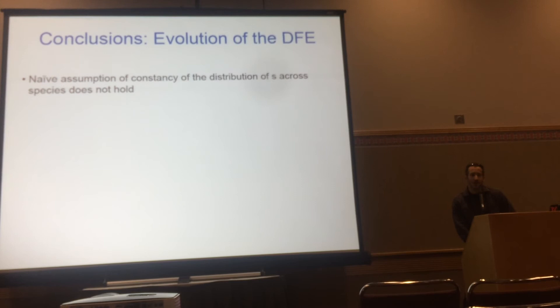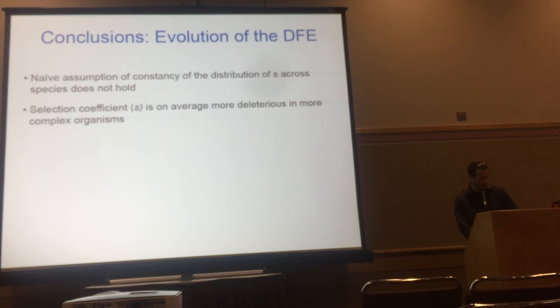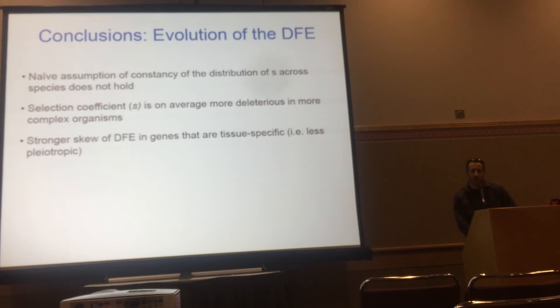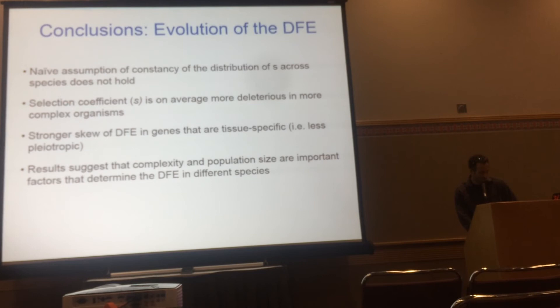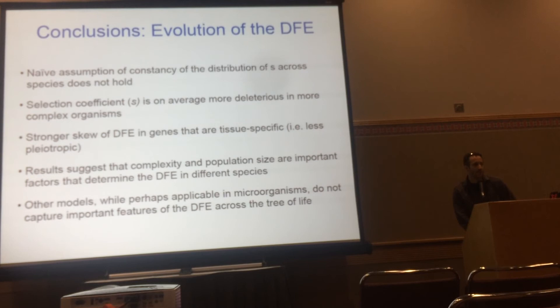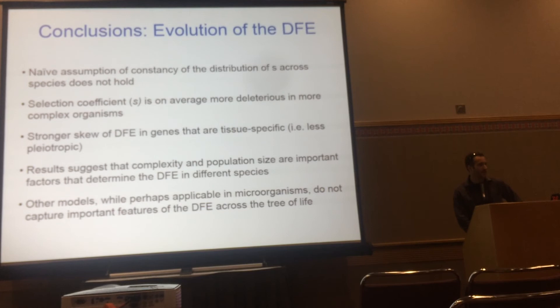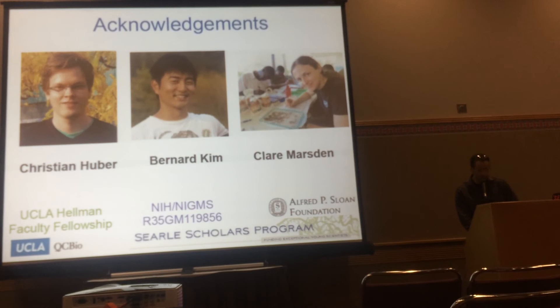In conclusion, the naive assumption that the distribution of selection coefficients is constant across species doesn't hold — selection coefficients are on average more deleterious in more complex organisms. We see a stronger skew of the DFE for genes that are less pleiotropic or have a tissue-specific expression pattern. Overall, Fisher's geometric model is consistent with many of these predictions, suggesting that complexity and population size are key features determining the DFE — though this doesn't mean features of other models don't capture aspects of DFE variation across phylogenetically diverse taxa.